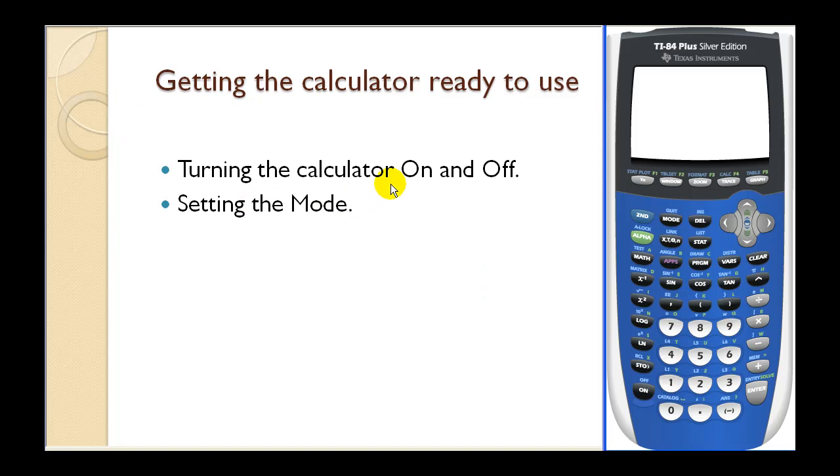The first thing we need to know how to do is to turn the calculator on. In the lower left-hand corner, there is an on button. So if we press on, the calculator will turn on. To turn it off, we have to press second and then on again. You can see the off right above the on button. So let's go ahead and turn it back on.